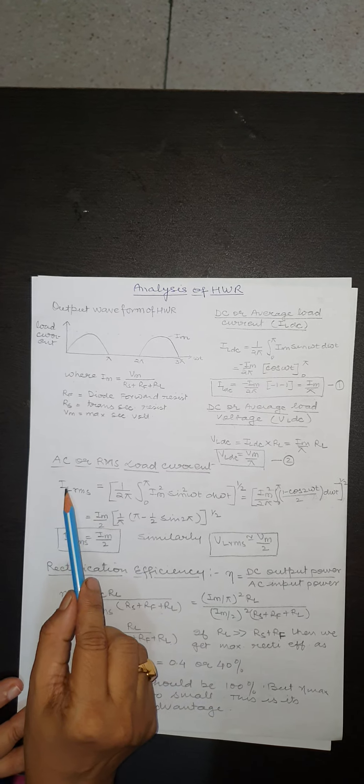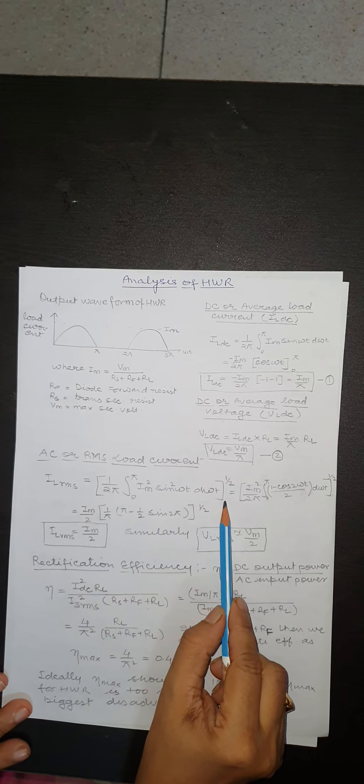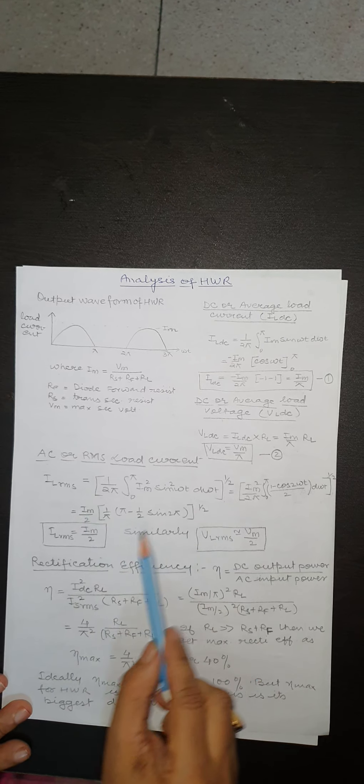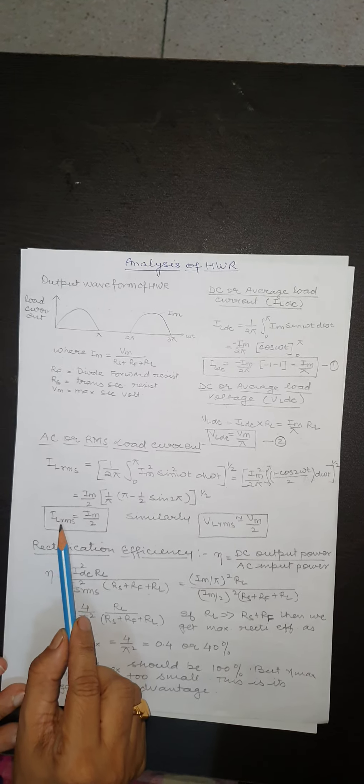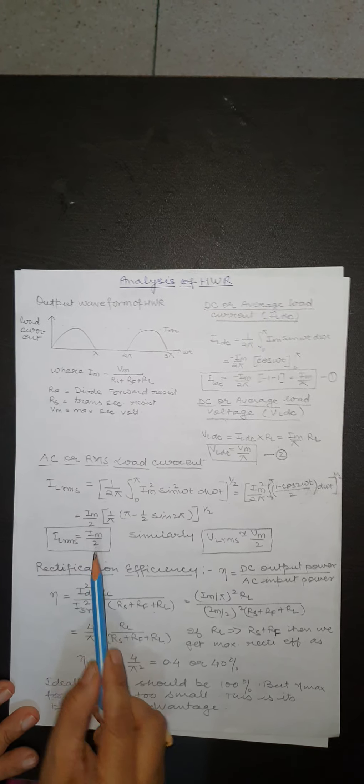AC or RMS load current IL,RMS is given by this formula. Solving this formula we get the value of IL,RMS equals Im/2. Similarly, VL,RMS equals Vm/2.